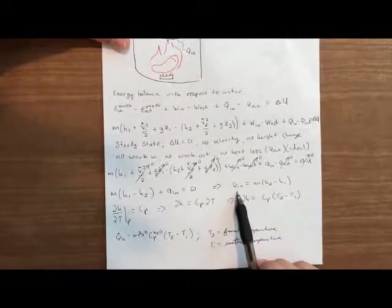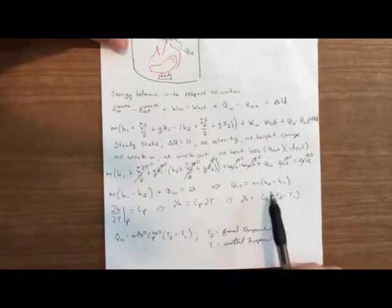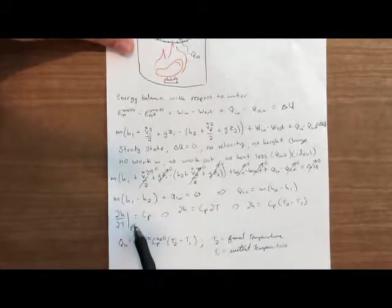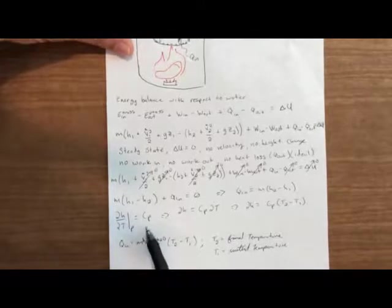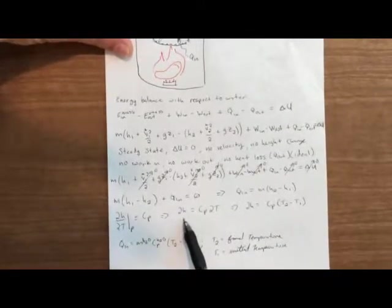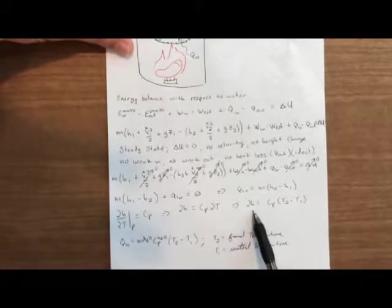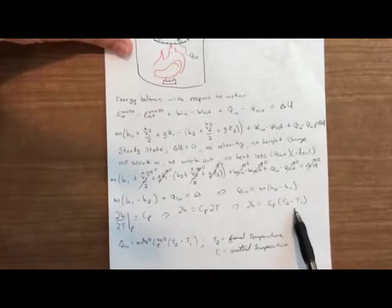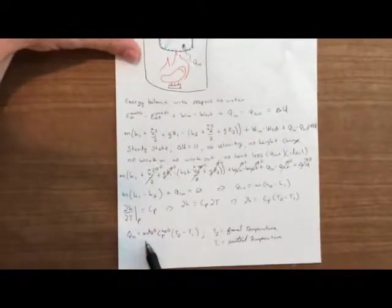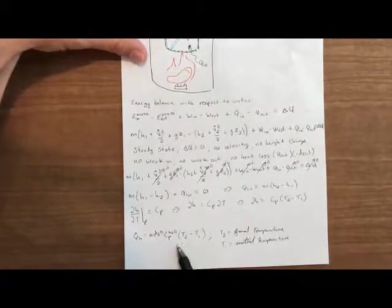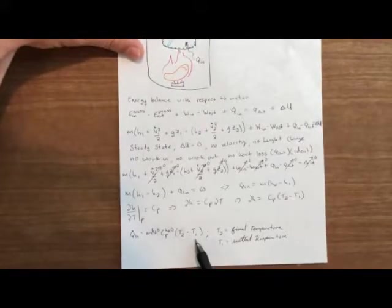And when we rearrange that, this is what we get, Q in equals the mass times H2 minus H1. We know that the change in enthalpy over time at constant pressure is Cp. So when we rearrange that, we get this form, simplified down, dH equals Cp times T2 minus T1. If we plug this dH into our original formula here, we get our heat in is equal to the mass of the water times the specific heat index of the water times the final temperature minus the initial temperature.